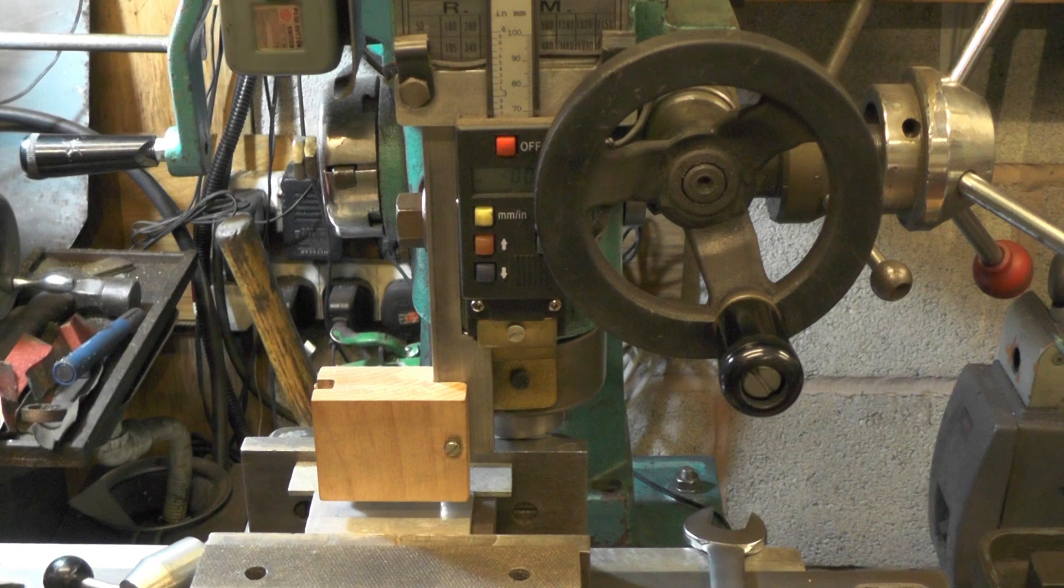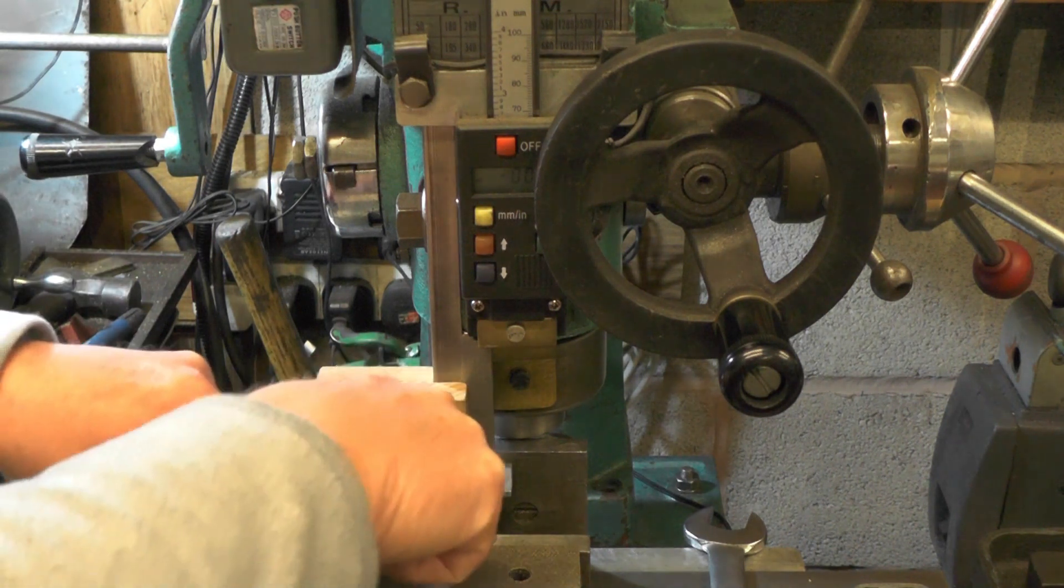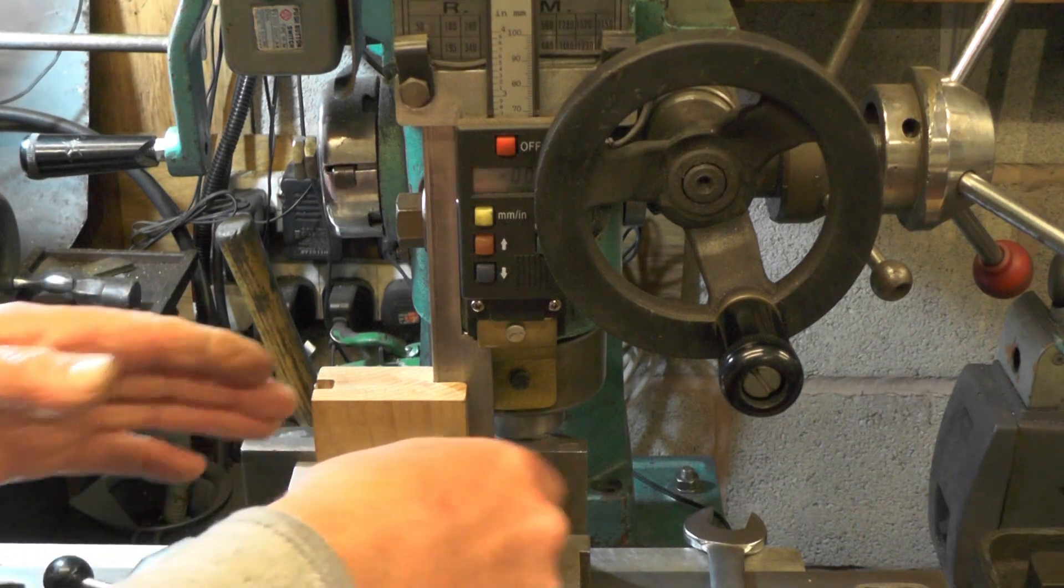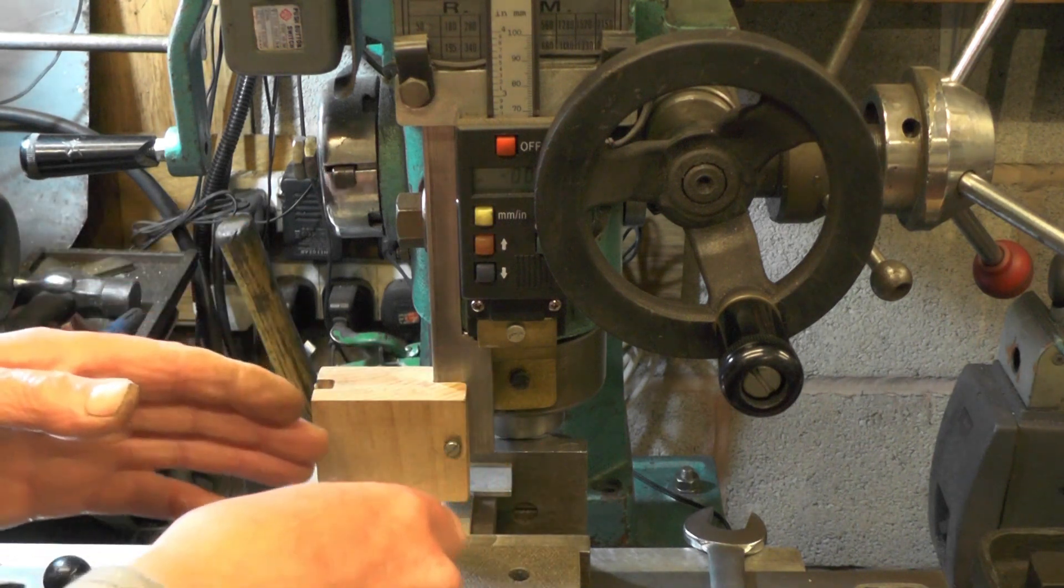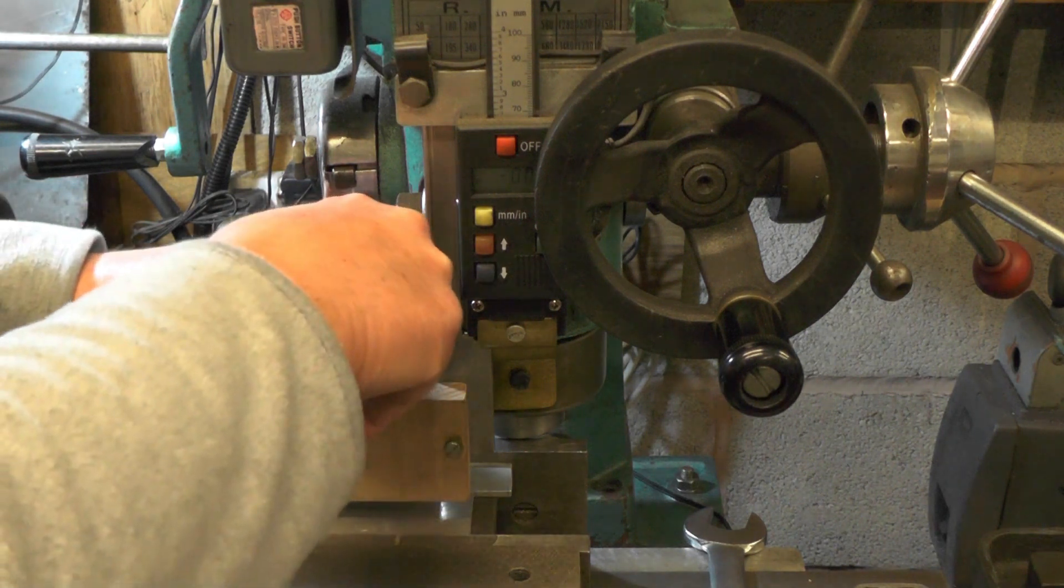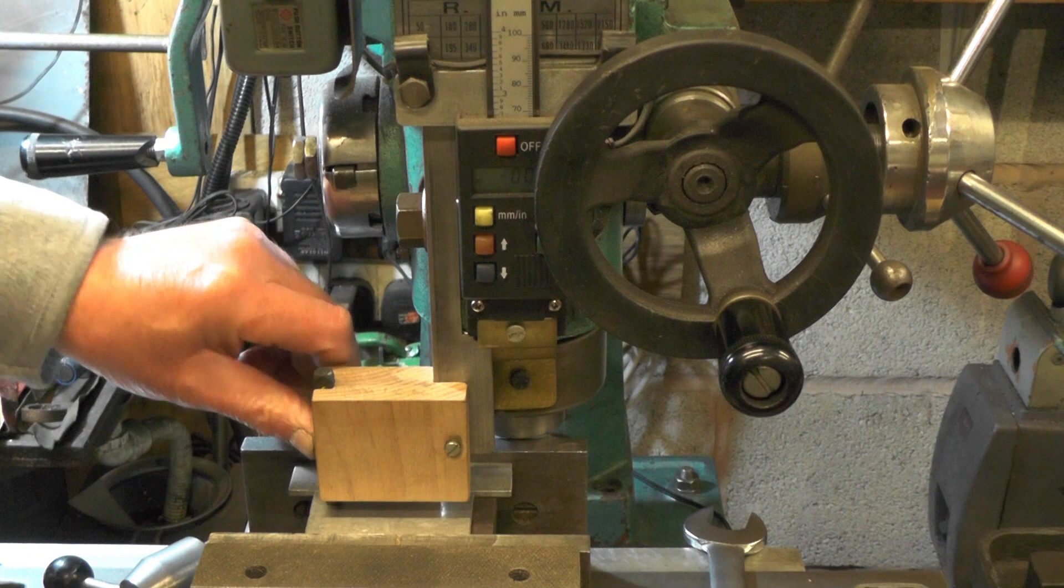You've just got to make sure it's long enough so that the spindle is missing everything, so when you move your table it's going to miss the vice. Then it's just a matter of setting your work up in the vice. You've got to work your lettering out and centralize everything.